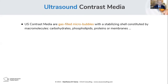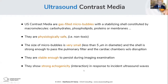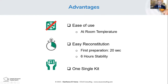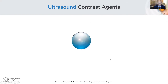First of all, what is contrast ultrasound? Contrast media is gas-filled microbubbles with a phospholipid shell. They are physiologically safe and non-toxic. The bubble size has to be very small — less than five microns; in our case the mean is 2.5 microns. They must be stable enough to persist during the examination and give strong echogenicity, meaning there is an interaction when you use the probe and you get enhancement. It is easy to use at room temperature, easy to prepare, with six hours stability, and very easy to follow as a single kit.